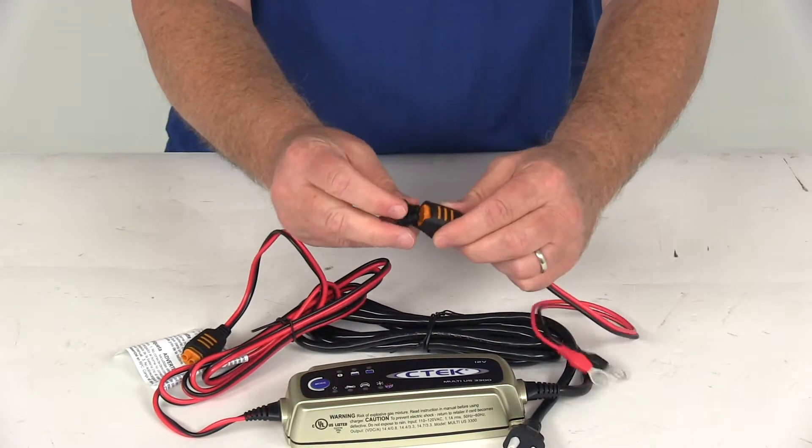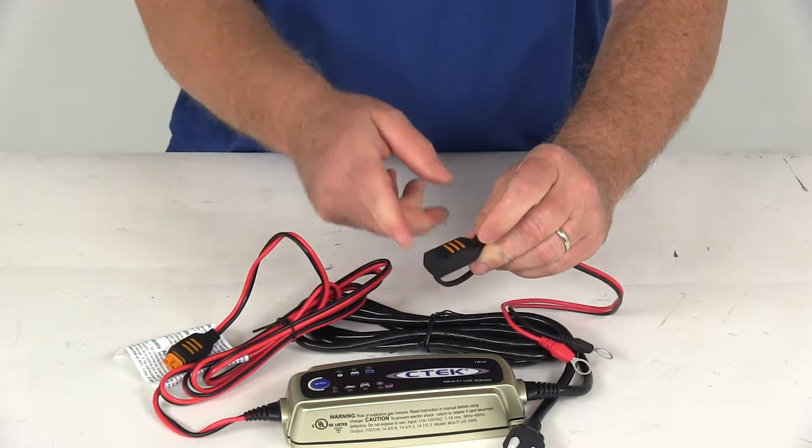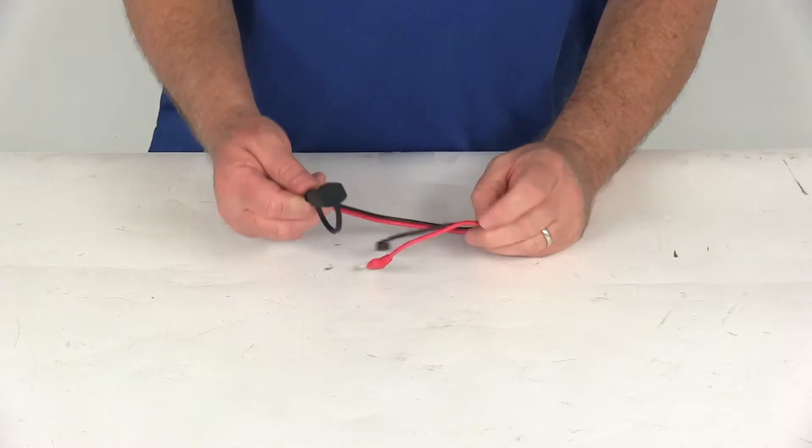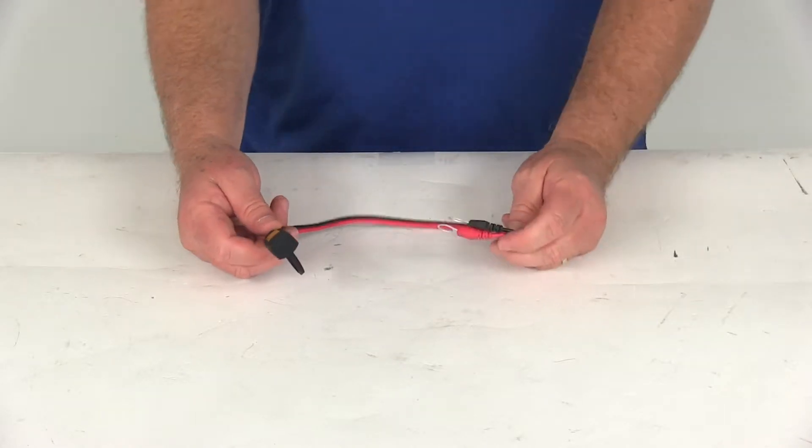And then this will stay attached to your vehicle. And then just put your cover in there to protect the connection points. This does make quick, easy work of charging your extra batteries and maintaining your additional vehicles.